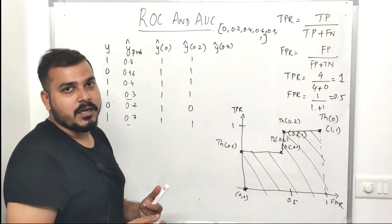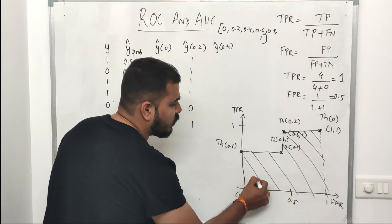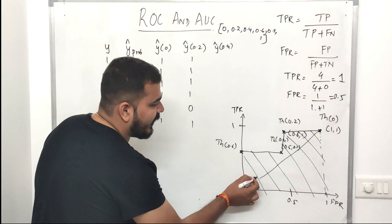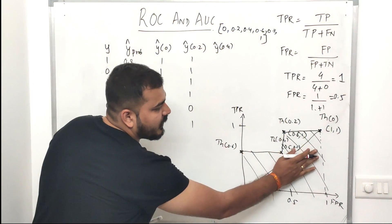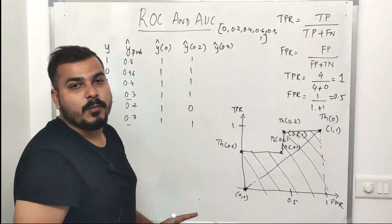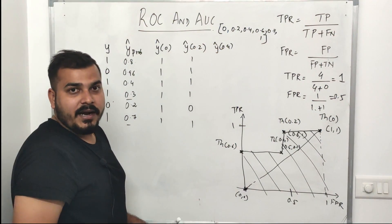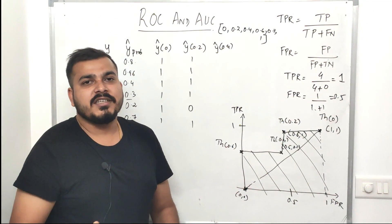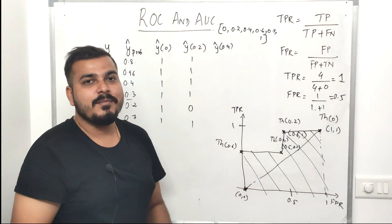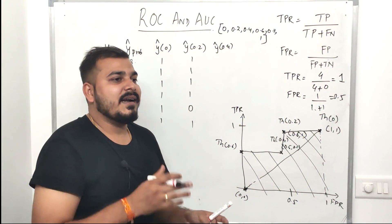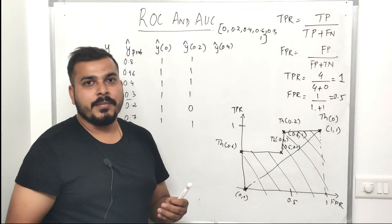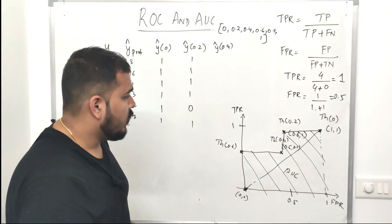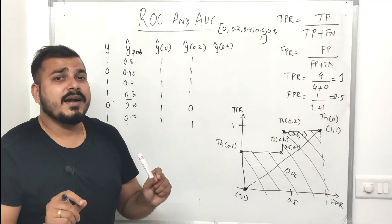Remember, the more the area under the curve, the better the model. I'll also draw a diagonal line from the center — a good model should always have AUC greater than 0.5. If it is less than 0.5, it is basically a dumb model, just random guessing. If the probability is less than 0.5, I could just randomly say 1 or 0.